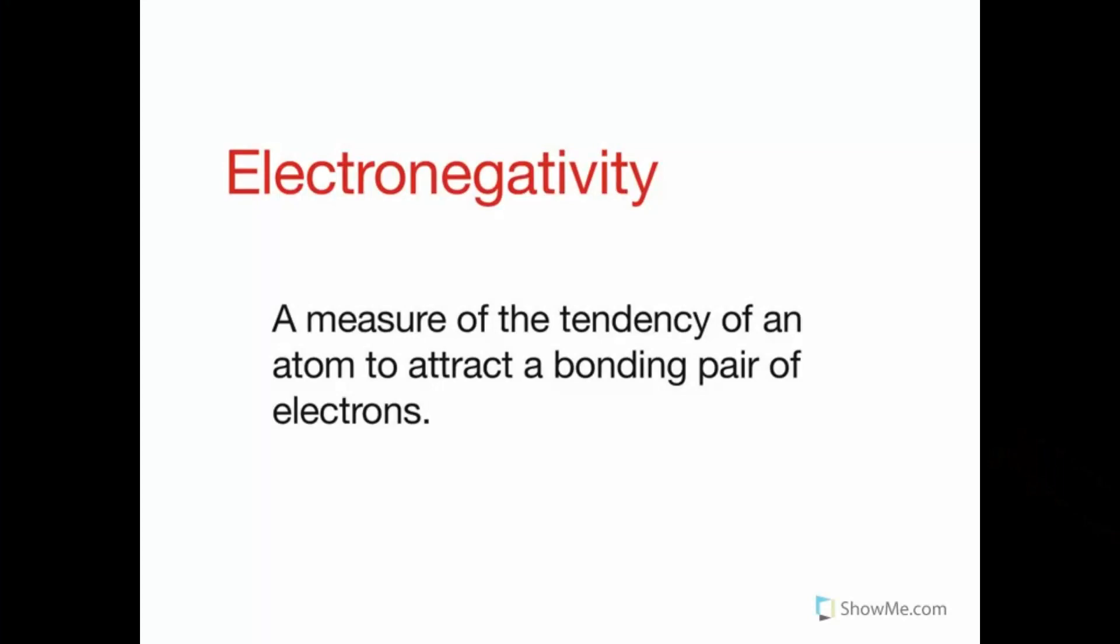Electronegativity is a measure of the tendency of an atom to attract a bonding pair of electrons. If we have two atoms, let's say A and B, when they form a bond, there are actually two electrons involved in this bond. We can show the electrons like this. Usually we leave the dots off and just show a line for a chemical bond.